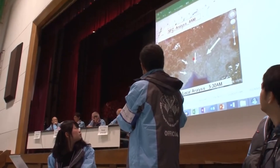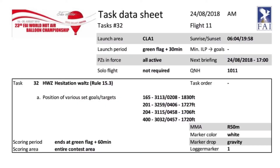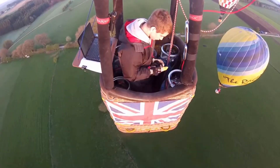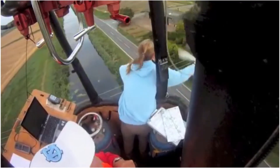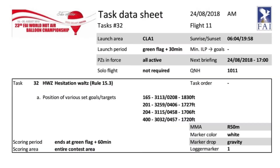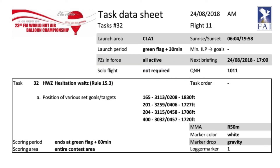The last piece of flight data that all task sheets will include is solo flight, which, if required, means the pilot cannot fly with another member of their crew. They can request to fly with a competition official if they don't wish to fly alone. If the task datasheet says solo flight not required, as in our example, this does not mean that you have to fly with someone else in the basket — you can fly solo if you want to, it's just up to you.